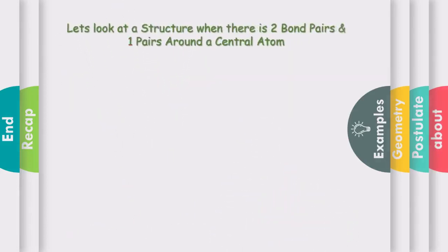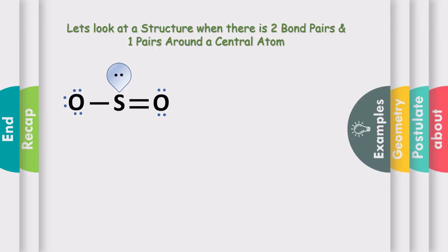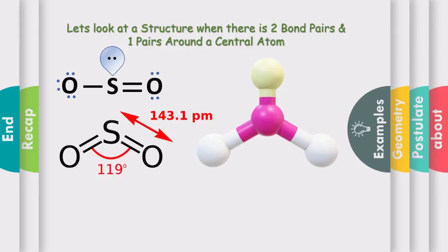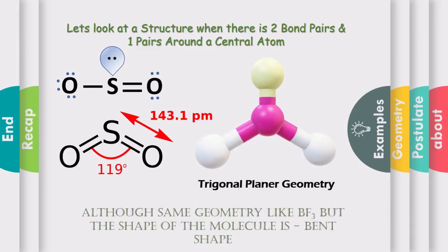In sulfur dioxide, there are also three things present around the central atom sulfur, so the geometry should accordingly be like BF3. But because lone pair–bond pair repulsion is greater than bond pair–bond pair repulsion, the two oxygen atoms in sulfur dioxide are pushed a little bit closer by the lone pair present on the sulfur atom. That is why, although the shape of the molecule is trigonal planar, it is called a bent shape molecule due to the lone pair–bond pair repulsion.